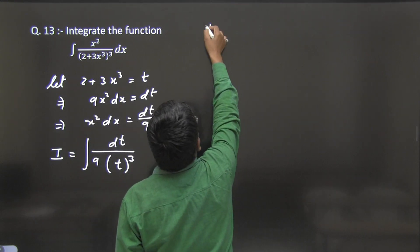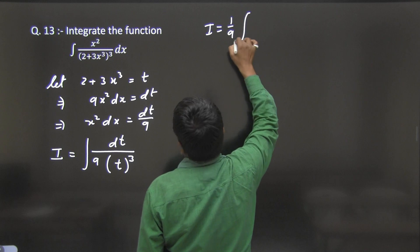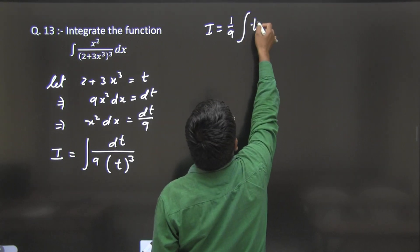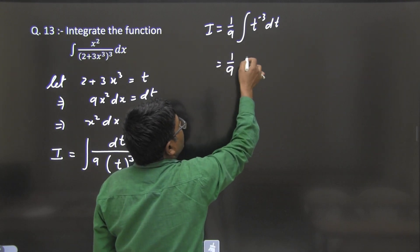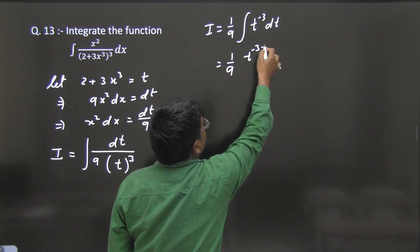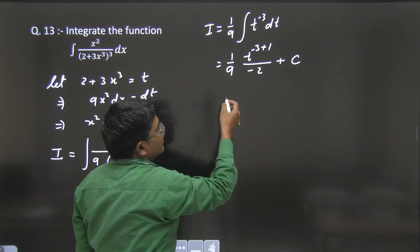From here we can write I = 1/9 ∫ t^(-3) dt = 1/9 × t^(-3+1)/(-3+1) + c = 1/9 × t^(-2)/(-2) + c.